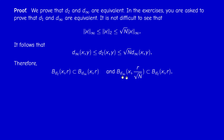For the second inclusion, take an element y in the ball B(x, r/√n) with respect to d∞. Then d∞(x,y) < r/√n, so √n · d∞(x,y) < r, meaning d₂(x,y) < r, so y is in the d₂-ball. Once again we reverse the order — the ball with respect to d∞ of radius r/√n is contained in the ball with respect to d₂ of radius r.